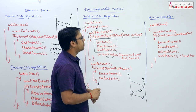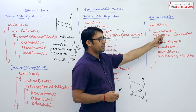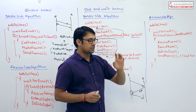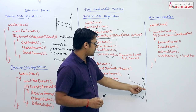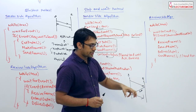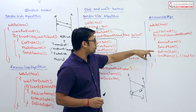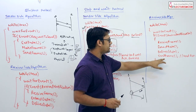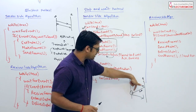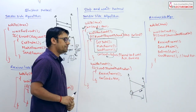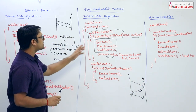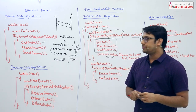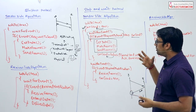On the receiver side for stop-and-wait: wait for an event. If the event is an arrival notification — meaning some packet has arrived — receive the frame, extract the data from the frame, deliver the data to the network layer, and then send a frame back, which means send the acknowledgement back to the sender.